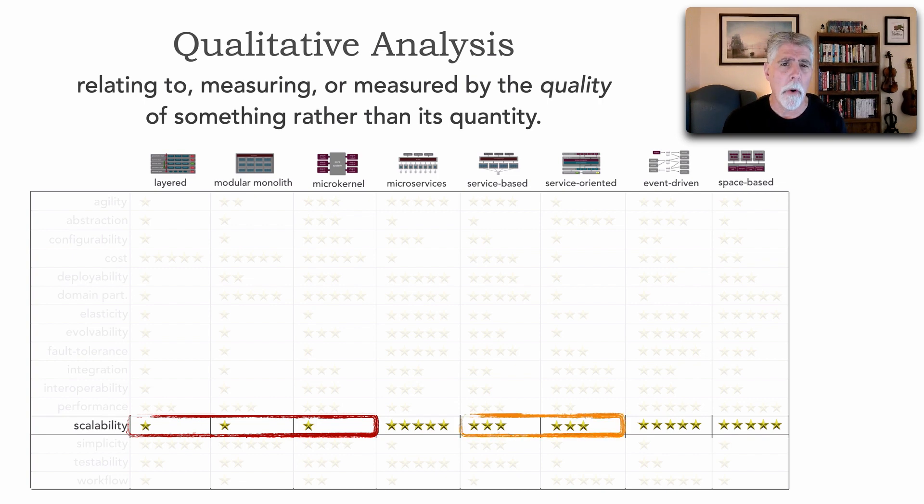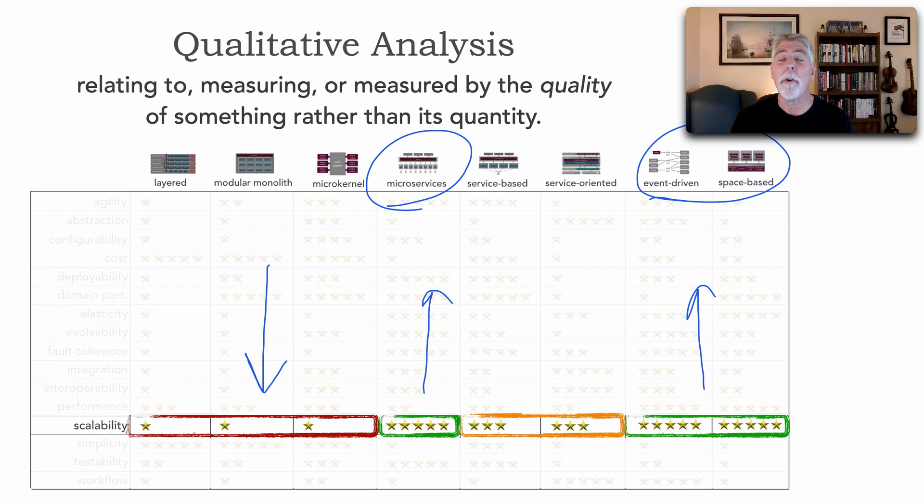As we move over to service-based and service-oriented architecture in a distributed architecture, we notice we put three stars there for scalability. They do scale but not as well as microservices, event-driven, or even space-based architecture. So notice we're not using metrics, we're not using quantitative analysis, but rather the quality of that characteristic is fairly low here and fairly high over here, which drives us towards our choices of possibly using microservices, event-driven, or even space-based, which have much better levels of scalability. Now this is a great example of qualitative analysis. As a matter of fact, let me show you another one.